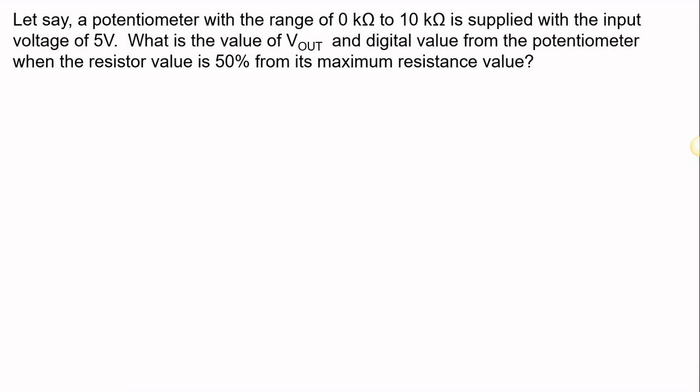From the experiment, let's say a potentiometer with a range of 0 kΩ to 10 kΩ is applied with the input voltage of 5V. What is the value of Vout and the digital value from the potentiometer when the resistor value is 50% from its maximum resistance value?